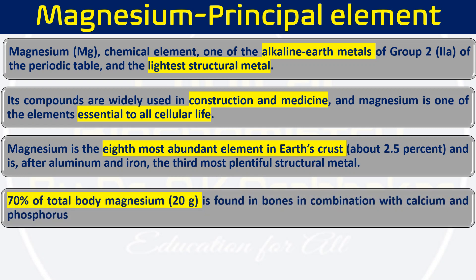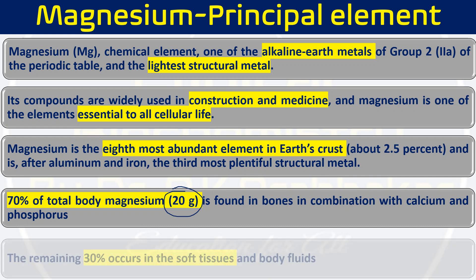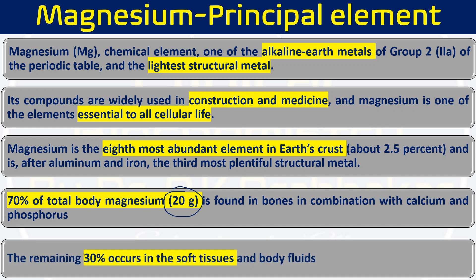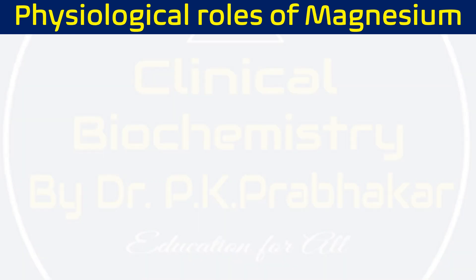In our body, roughly we have 20 grams of magnesium. Out of this 20 grams, 70% is present in the bones along with calcium and phosphorus — roughly 14 grams in bone and teeth. The remaining 30% is present in the soft tissue and body fluids, approximately 6 grams.